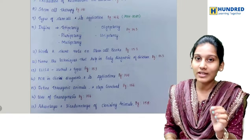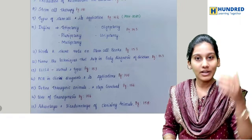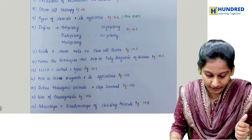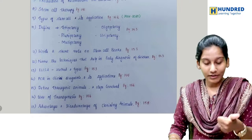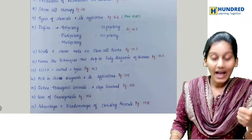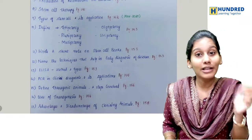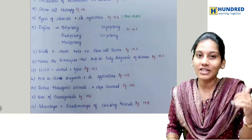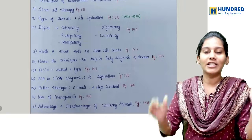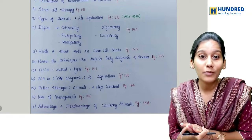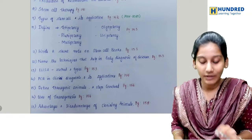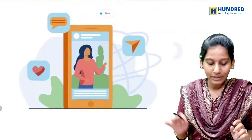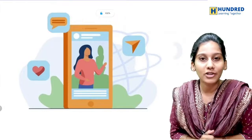Transgenic animals: steps involved, how do they produce it, and uses. Transgenic and very importantly, cloning animals — advantages and disadvantages. So these are the important questions from the Zoology Chapter 9, Applications of Biotechnology.